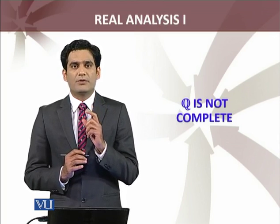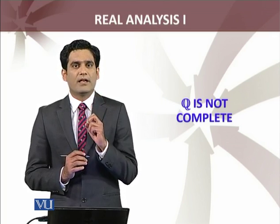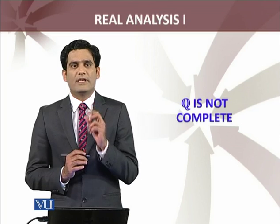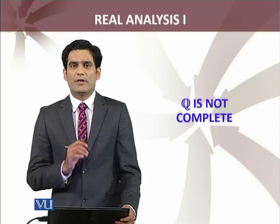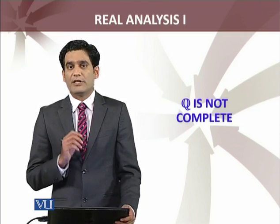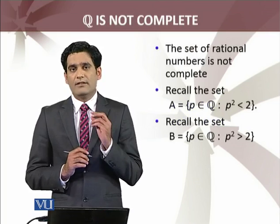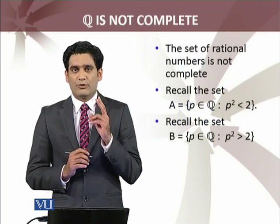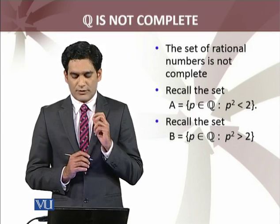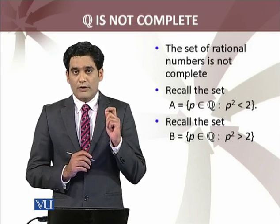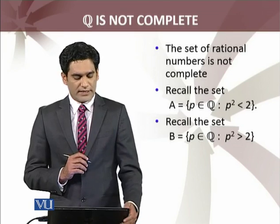The set of rational numbers does not satisfy this property. As usual, the two sets discussed in analysis — set A and set B, such that P² > 2 and P² < 2 — I will reconsider these in today's module. The set of rational numbers is not complete, and you have the two sets — the same ones we have discussed in quite a few modules before — set A and set B of rational numbers such that P² < 2 and P² > 2.